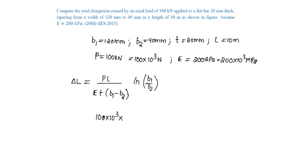L length is 10 meters into 10 power 3 mm by Young's modulus is 200 into 10 power 3 megapascals into thickness is 20 mm into B1 is 120 minus 40 into log of 120 by 40 which is equal to 3.433 mm.